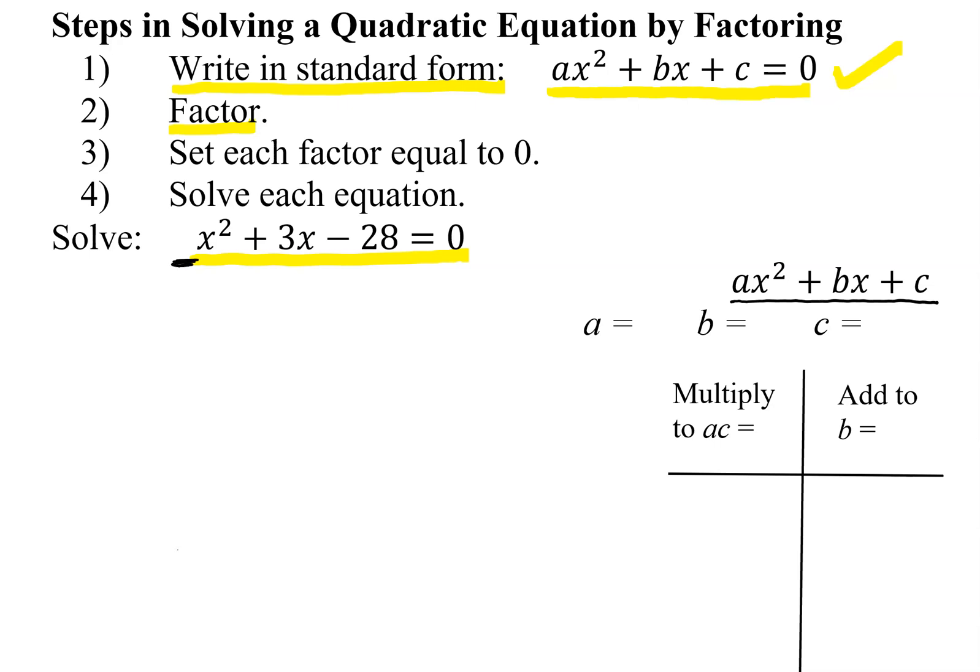What is the coefficient of the x squared? There's a 1 in front of the x squared, so a is 1. What's b? b is 3, and c is the constant term, negative 28.